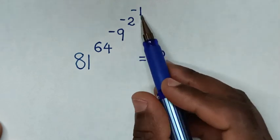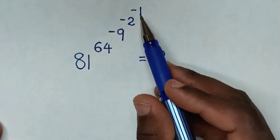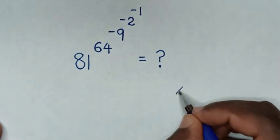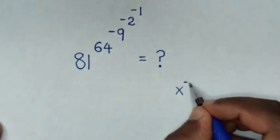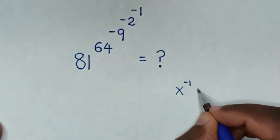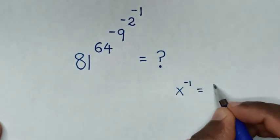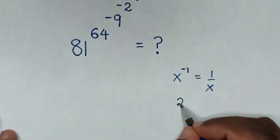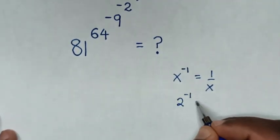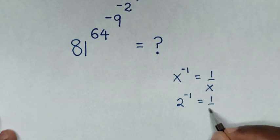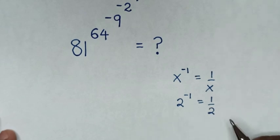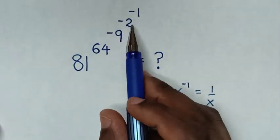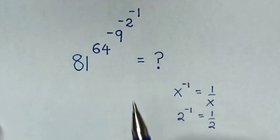Starting with 2 power of negative 1. 2 power of negative 1 is in the form of x power of negative 1, which is equal to 1 over x. So 2 power of negative 1 is equal to 1 over 2. Then we substitute 1 over 2 into 2 power of negative 1.